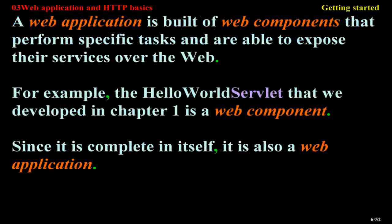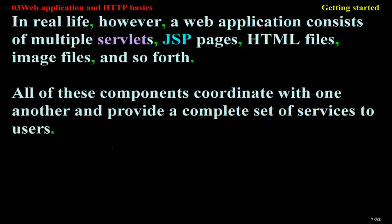This increases the reach of the applications tremendously while alleviating versioning and upgrading issues. A web application is built of web components that perform specific tasks and are able to expose their services over the web. For example, the Hello World servlet developed in Chapter 1 is a web component. In real life, however, a web application consists of multiple servlets, JSP pages, HTML files, image files, and so forth. All of these components coordinate with one another and provide a complete set of services to users.